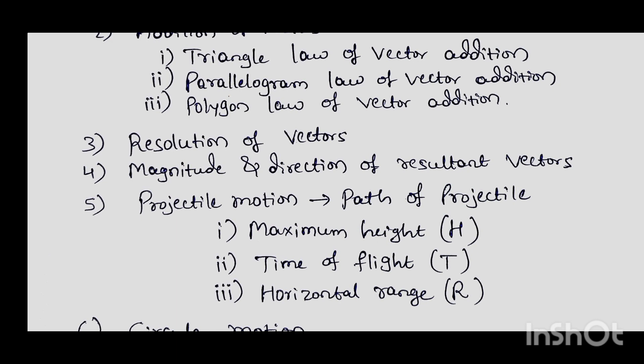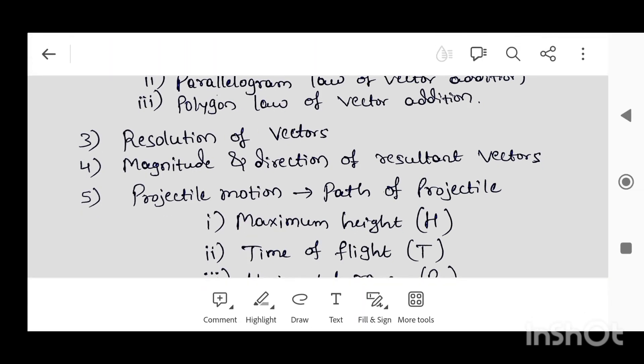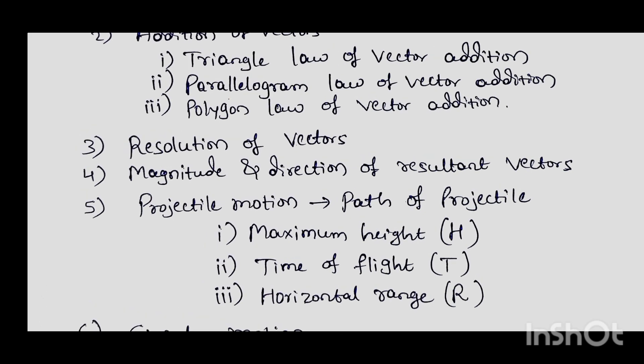Another parameter is horizontal range. After throwing a ball into space in a curved path, it reaches a certain height and then falls to the earth's surface. The distance along the horizontal axis from the point of projection to the point where the object lands is the horizontal range, denoted by capital R. This derivation also carries three marks.